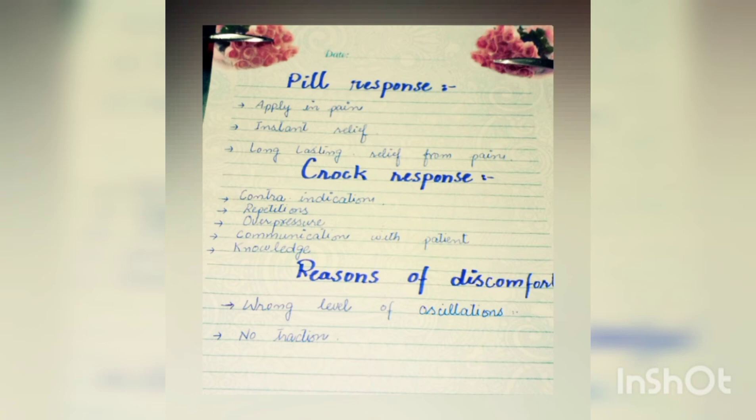CROOK stands for: C for Contraindication, R for Repetition, O for Overpressure, C for Communication, and K for Knowledge. Repetitions of 3 to 5 per second should not be exceeded — this is a contraindication. Overpressure should not be applied to the patient — this is also a contraindication. The patient should communicate with you during applying NAG. Knowledge includes understanding anatomy, age group, diseases, and patient response — the reasons of discomfort.